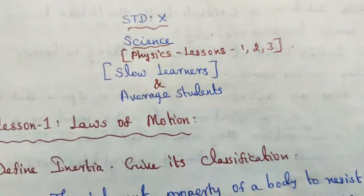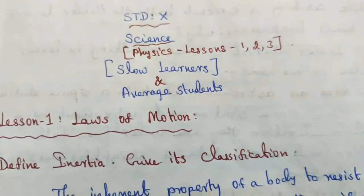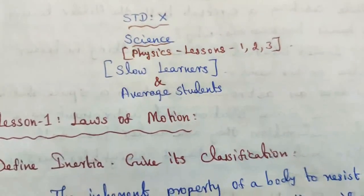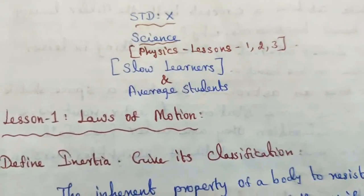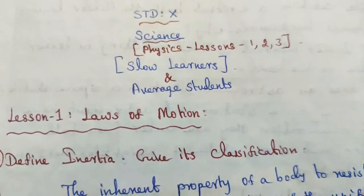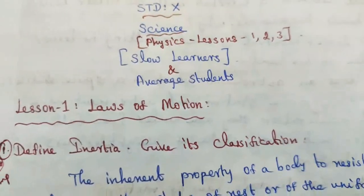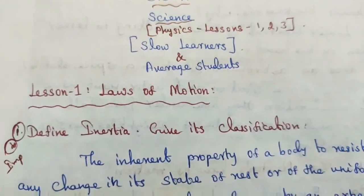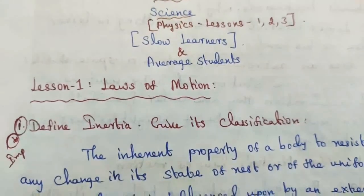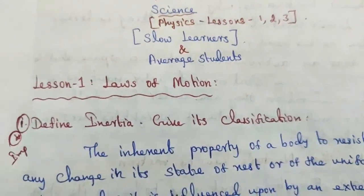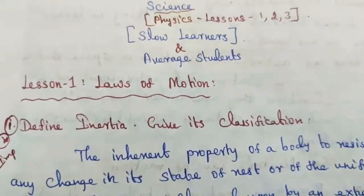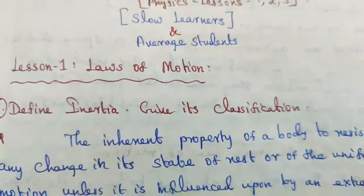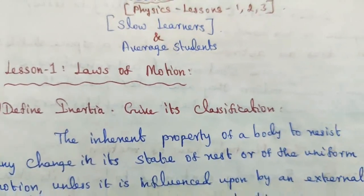Standard 10 Science Physics, lessons 1, 2, and 3. This is the study material for slow learners and average students. Lesson 1: Laws of Motion. Question number one, important question: define inertia.